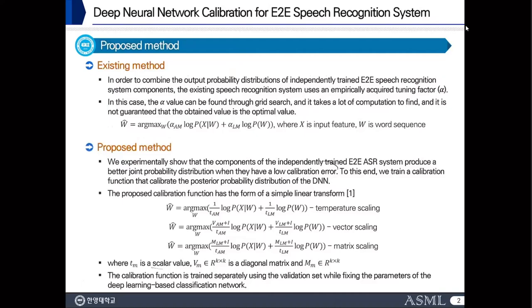There are some existing methods to decode the E2E ASR system. In this case, we have two probability distributions, for example in the acoustic model and language model. In the existing method, we combine these with some tuning vectors like alpha. This alpha needs to be found by search and it takes a lot of time, and it cannot be guaranteed that the obtained value is the optimal value.